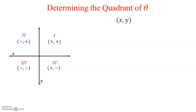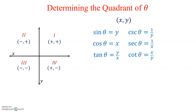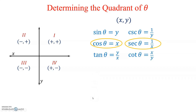Now we'll transition to trigonometry. All six trigonometric functions can be written in terms of x and y: sine is simply y, cosine is x, tangent is y over x, cosecant is 1 over y — the reciprocal of sine — secant is 1 over x — the reciprocal of cosine — and cotangent is the reciprocal of tangent. We can see that cosine and secant are both related to the x-coordinate.